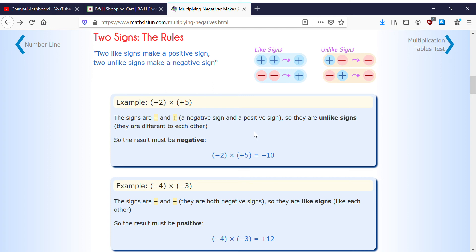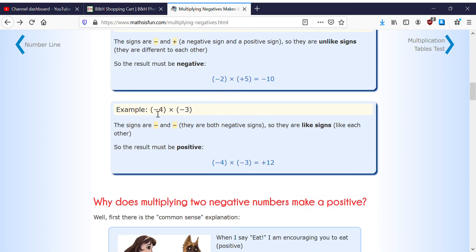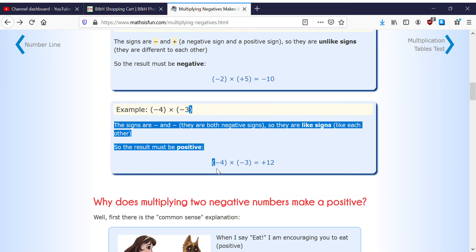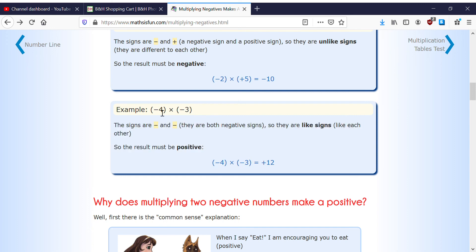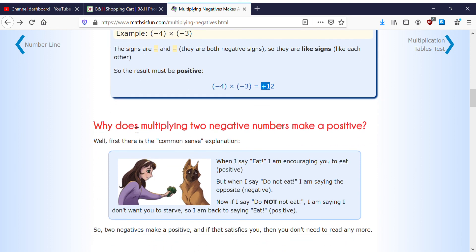So why does multiplying two negative numbers make a positive? Well, first there's a common sense explanation. When I say 'eat' I am encouraging you to eat (positive).